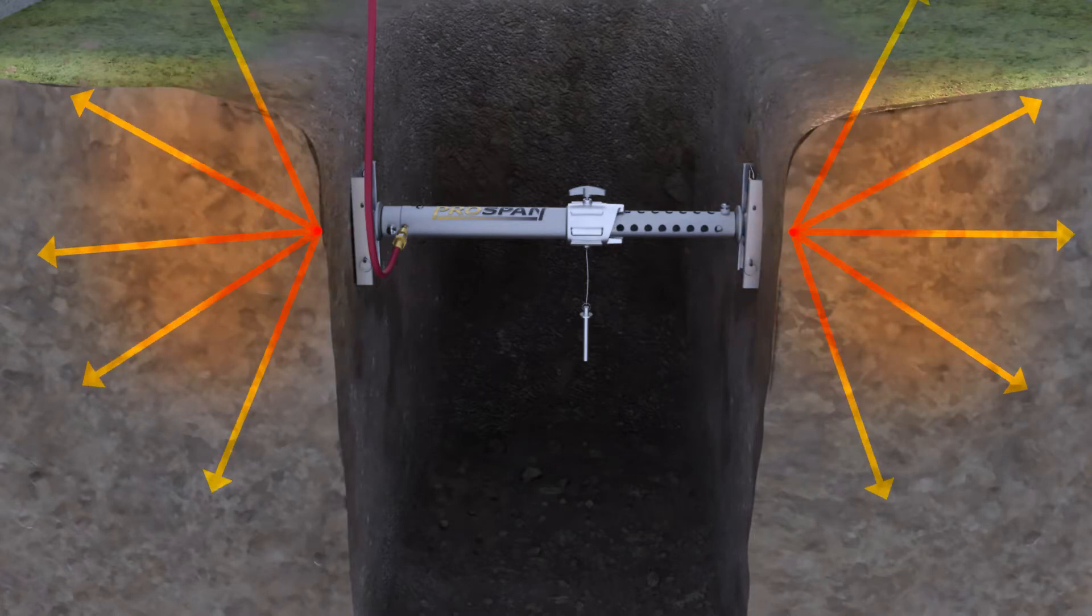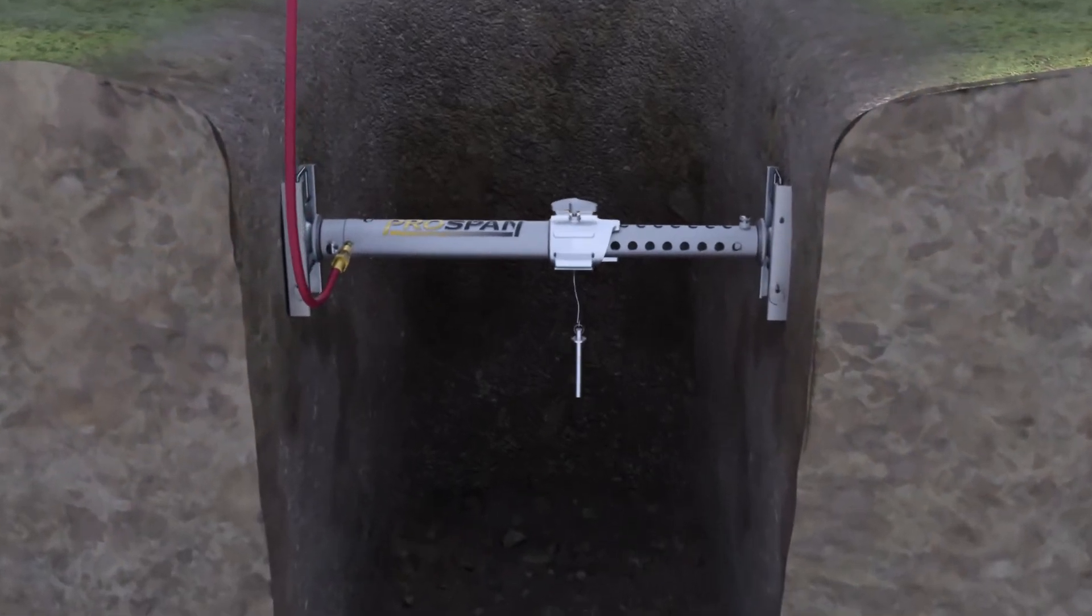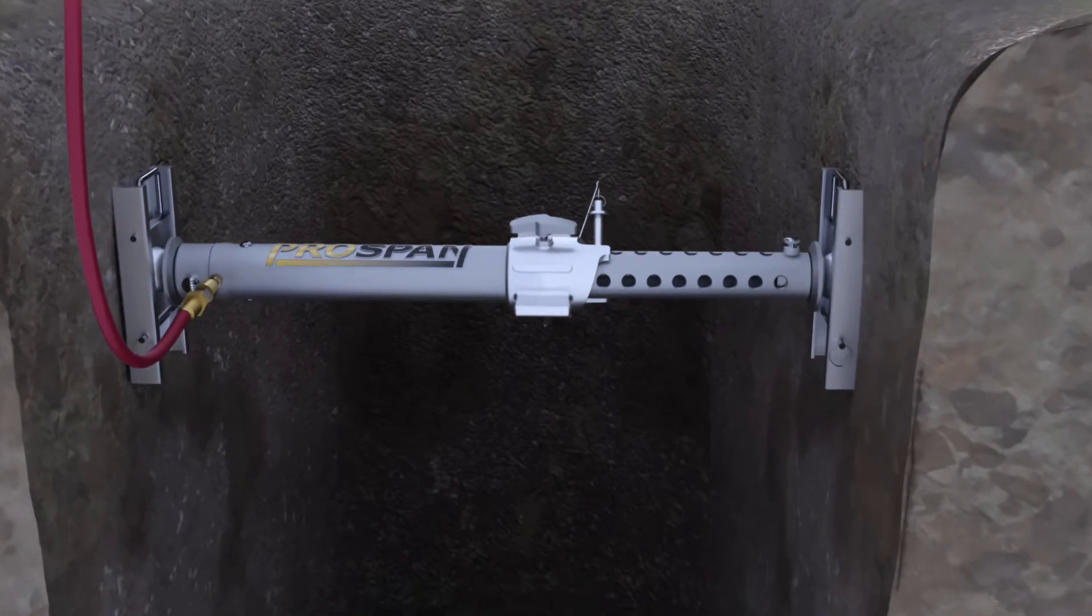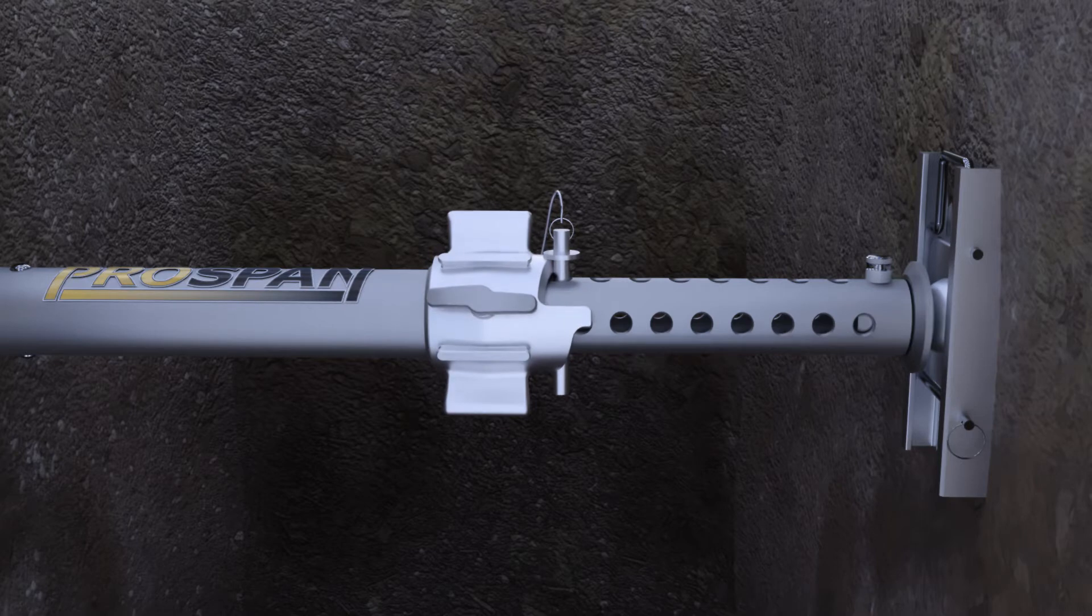Once the piston is finished expanding, the outer collar of the ProSpan is rotated until the piston hole that is closest to the collar is exposed. The tethered steel pin is inserted through this hole, and then the outer collar is rotated until it firmly engages the steel pin.